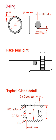Manufacturing: O-rings can be produced by extrusion, injection molding, pressure molding, or transfer molding.